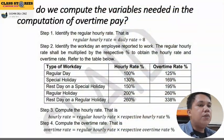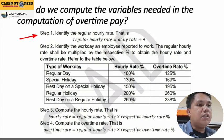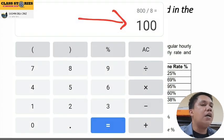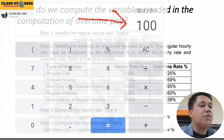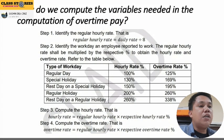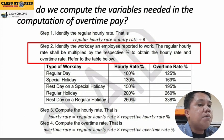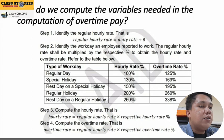Before we can compute for the overtime pay, we need to compute first the variables needed: the regular hourly rate, hourly rate, and overtime rate. Step one: the regular hourly rate is equal to daily rate divided by 8. For example, if your daily rate is 800 pesos divided by 8, that is equal to 100 pesos — meaning 100 pesos is your regular hourly rate. Step two: identify the workday the employee reported to work. The regular hourly rate shall be multiplied by the respective percentage to obtain the hourly rate and overtime rate, as shown in the table.